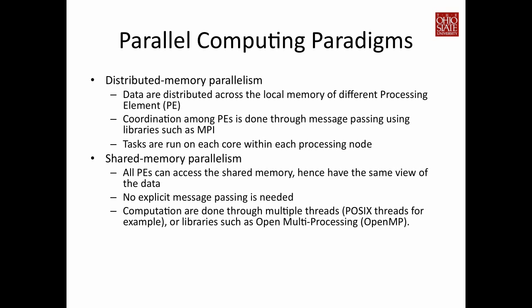Another type is shared memory parallelism, for machines where all processing elements can access the same data and therefore have the same view of it. For this type of parallelism, there is no explicit message passing needed. You design algorithms assuming all data are available, and focus on dividing your task into parallel threads. Libraries such as OpenMP are designed to support this scenario.